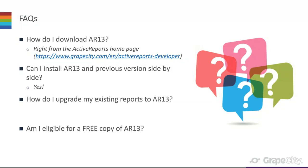How do I upgrade my existing reports to Active Reports 13? That's very simple. Once you install Active Reports 13, it comes with a tool in Visual Studio called Convert to Active Reports 13. That tool will search your projects or application, find any instances of Active Reports, and convert them to the newest version.